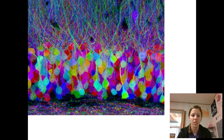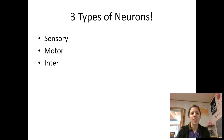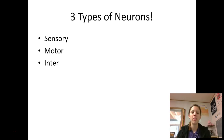Here's a picture of a bunch of neurons that have been magnified — I think it's really pretty. Now that we know the structure of neurons, we're going to talk about three types of neurons you need to be familiar with: sensory, motor, and interneurons.